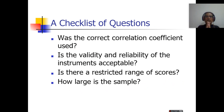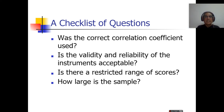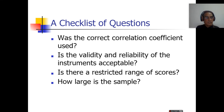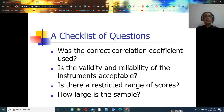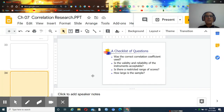Whenever you conduct correlation research, you must keep these points in mind as a checklist: Was the correct correlation coefficient used? Is the validity and reliability of the instrument acceptable? Is there a restricted range of scores? How large is the sample? These four questions will work like a checklist whenever you apply correlation research. This has been a brief description of correlational research.